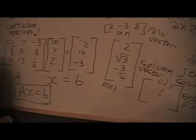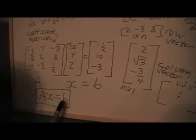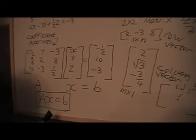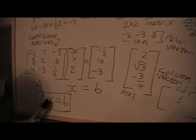So in matrix form, systems of linear equations have the form Ax equals b, where A is the capital letter, and the x and the b are lowercase letters.